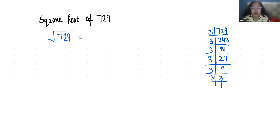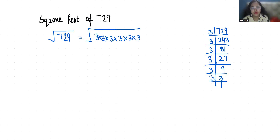So we can write it as under square root: 3 times 3 times 3 times 3 times 3 times 3, or under square root 3 power 6.